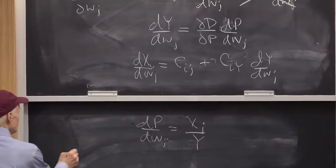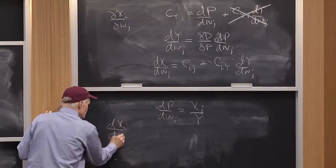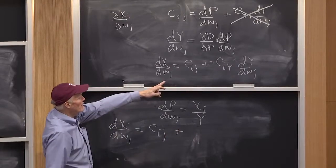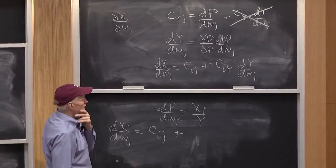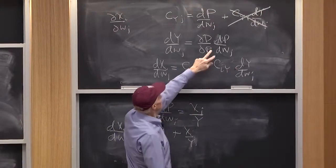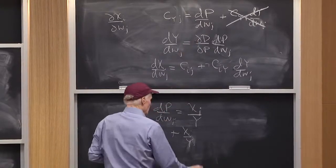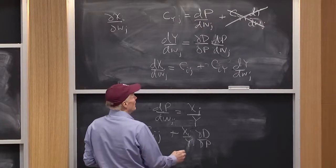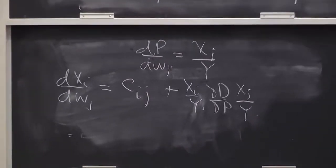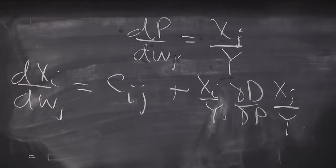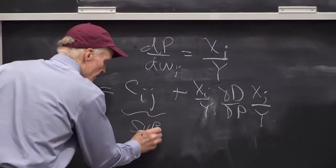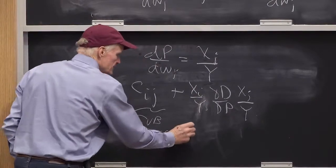So what I'm going to get is dxi dwj equals cij plus ciy was what? dy dwj is dp dwj times the derivative of demand with respect to price. Partial d partial p times xj over y. In terms of our substitution and scale effects, this is the substitution effect. And this is the scale effect.